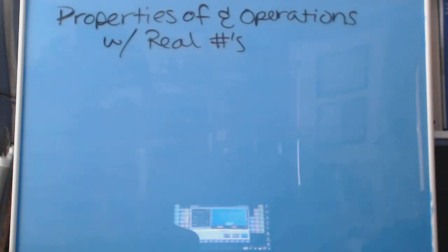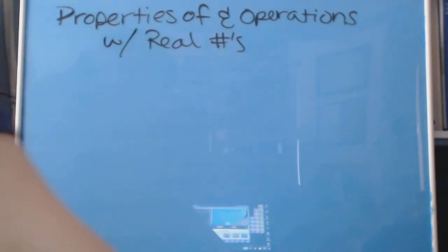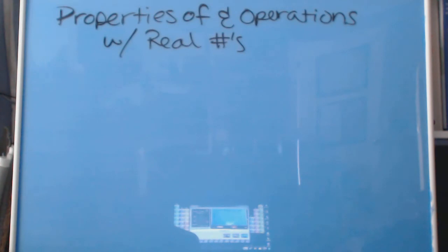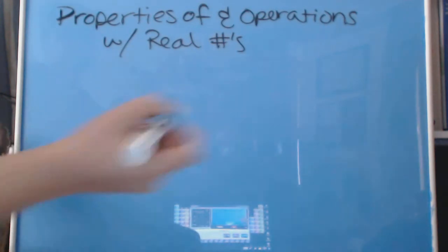Hey guys, welcome back. This is the Math Panda here, and I'm doing section 1.3 out of my intermediate algebra book. This one is about properties of and operations with real numbers — so we're looking at real numbers and what we can actually do with them. I'm going to take out number 11, dealing with absolute values. This will be fun.